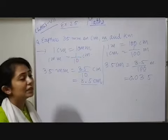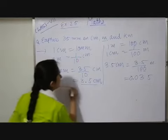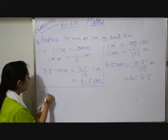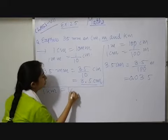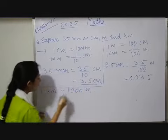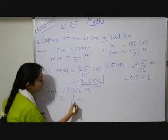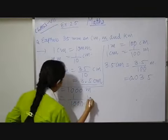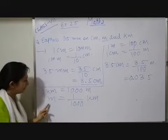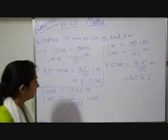Now, last one, I have to convert meter into kilometer. So, 1 kilometer equals 1000 meter. Therefore, 1 meter equals 1 by 1000 kilometer, in a reverse way with 1000 in the denominator.